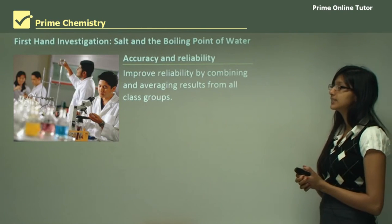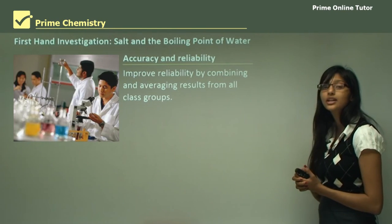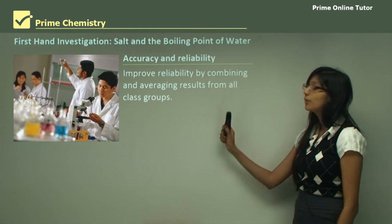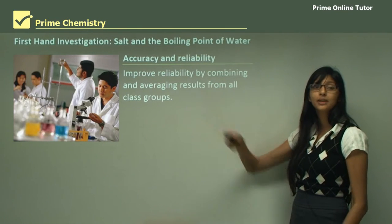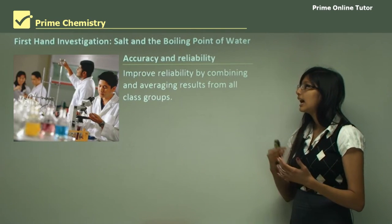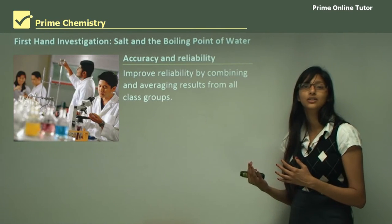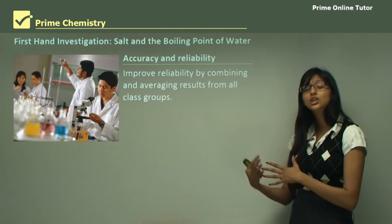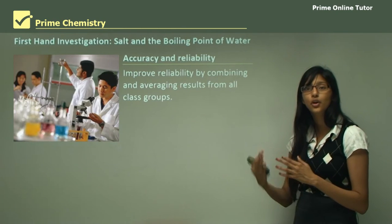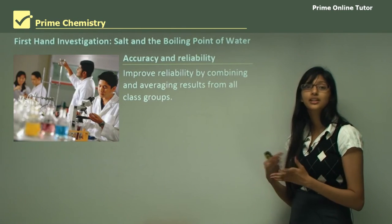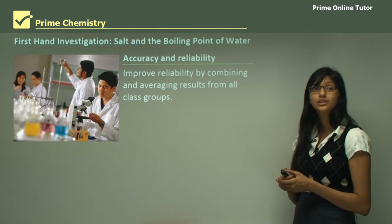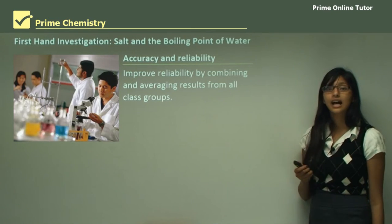Now let's look at accuracy and reliability of this experiment. To ensure reliability, always remember that reliability is about repeating the experiment. The method should be easily repeatable by someone else. By repeating the experiment and getting the same results over and over, you ensure the result is valid, and there are no impurities or disruptions hampering your result.